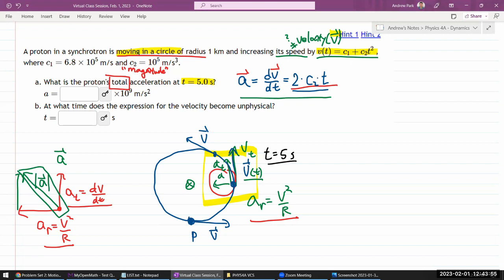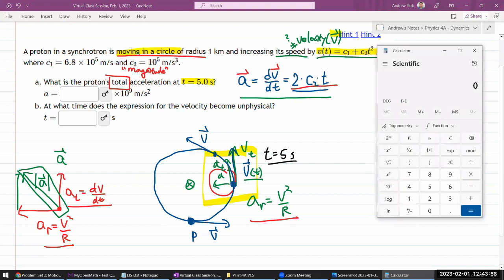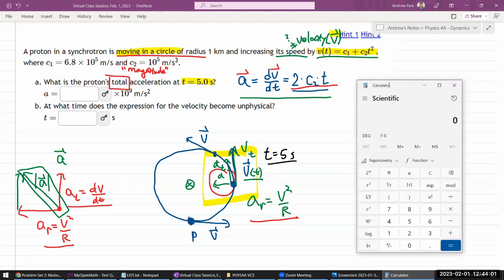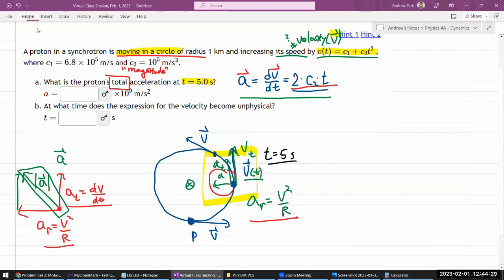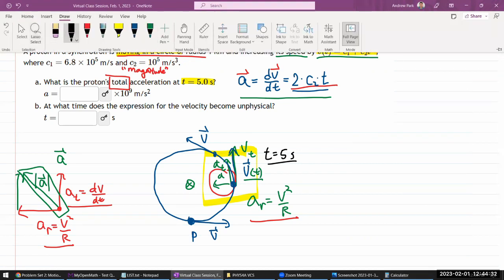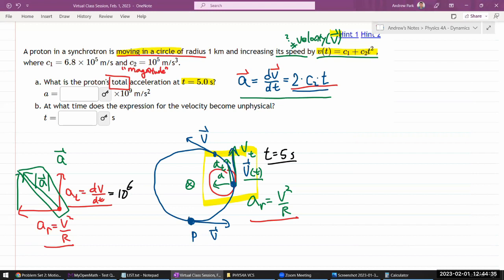So let me work out the numbers. I think here it's quickest to do it, just in a calculator. So I have this expression already worked out, 2 times C2 times just 2t. So 2 times C2, I have 10 to the power of 5, or 1 times 10 to the power of 5, times 5 seconds, 5. So I have 1 or 10 to the power of 6. So this is going to be 10 to the power of 6, I guess the units should be meters per second squared.